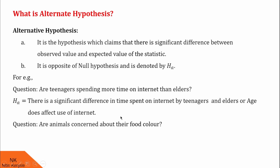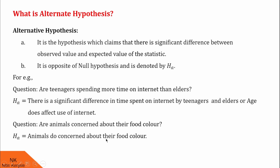Similarly, when your question was: are animals concerned about their food color? Over there, we took H0 as: animals do not concern about their food color. Now we should write HA as: animals do concern about their food color. I hope you understood these concepts of null hypothesis and alternative hypothesis.